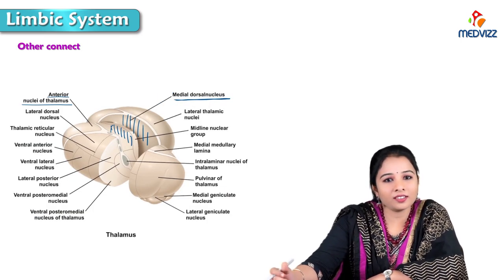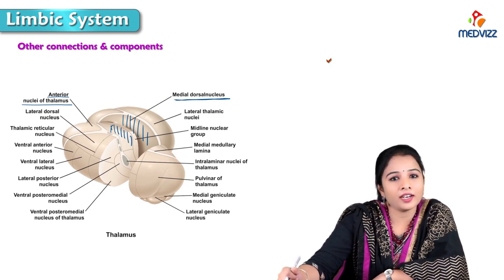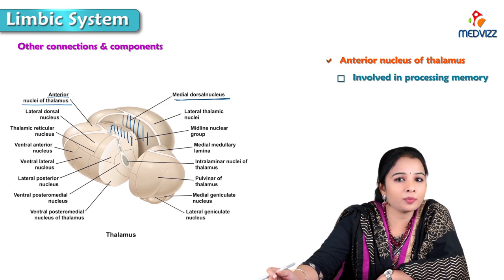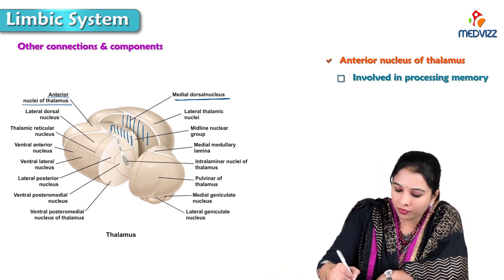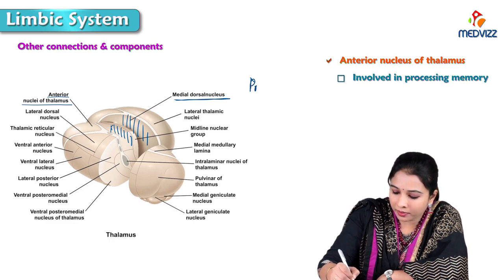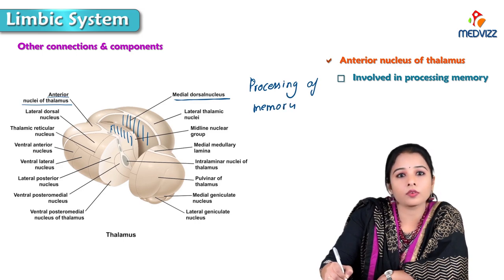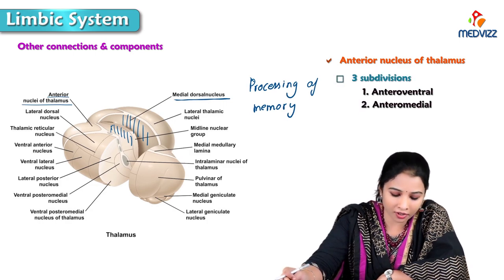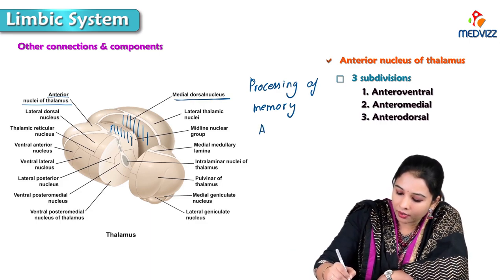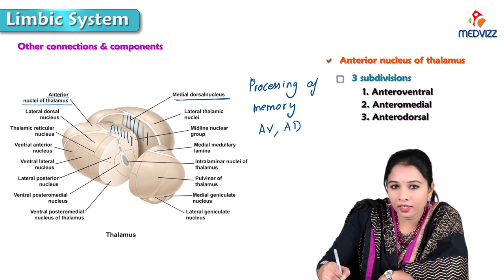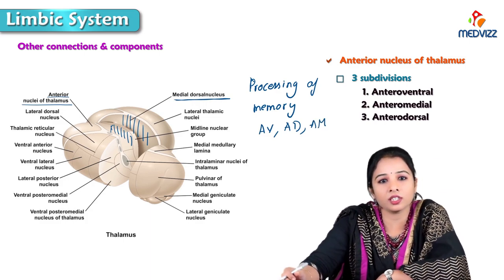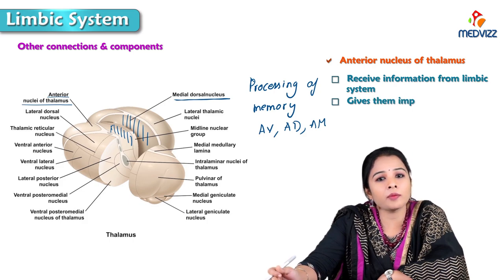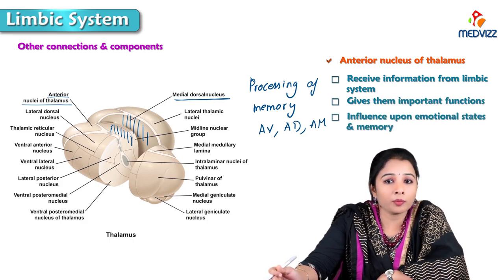The anterior nucleus of the thalamus forms part of the mammothalamic tract and is involved in the processing of memory. It is divided into three subdivisions: anteroventral, anteromedial, and anterodorsal. These nuclei receive information from the limbic system of the brain, giving them important functions and influence upon emotional states and memory. This system is a collection of structures derived from the main parts of the brain: telencephalon, diencephalon, and mesencephalon.